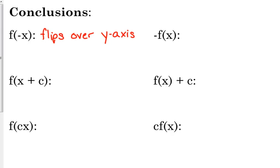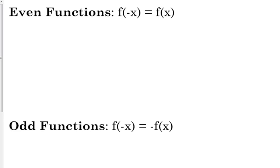The absolute value doesn't change because it's symmetric — the left side is the exact same as the right side. Same thing with x squared: x squared is symmetric, so if you flip it, you end up with the exact same thing you started with. Those are two examples of what we call an even function.